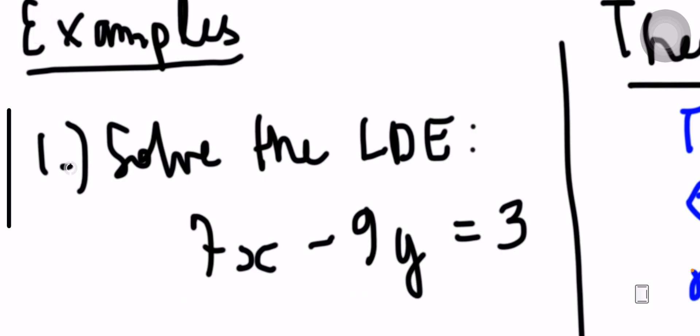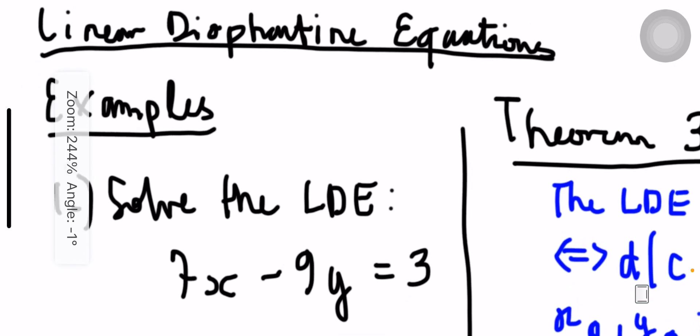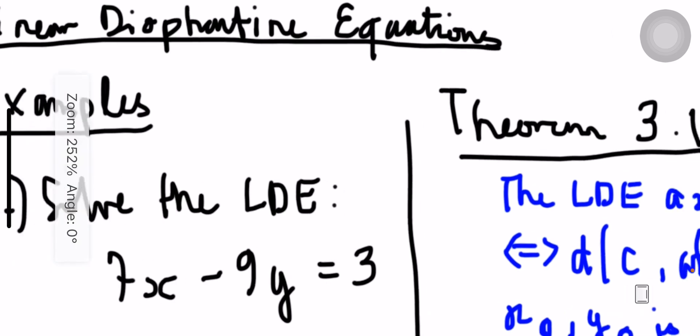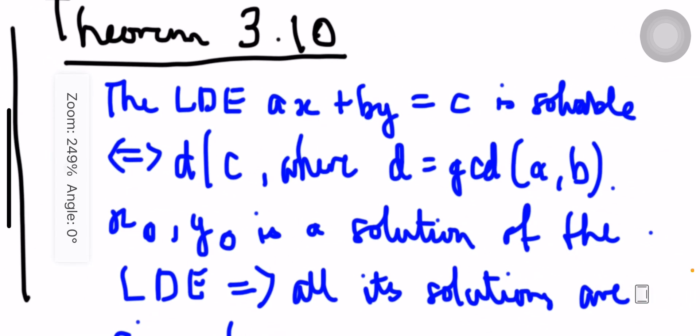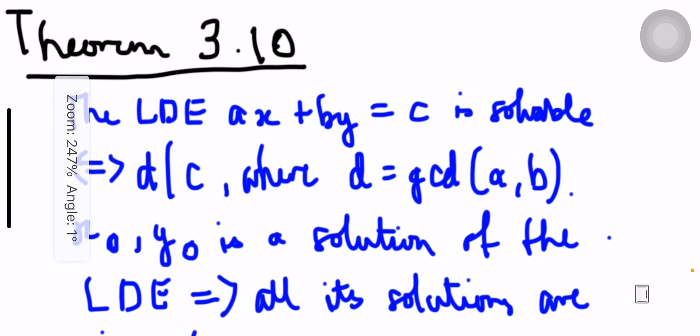What I'm doing here — I'm actually using my cell phone right now. I'm checking this app and a new stylus that I have, and let's see if it will work on this video. First, we need to remember a theorem that will help us in answering this question: solve the linear differential equation 7x minus 9y equals 3.